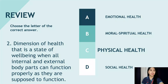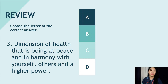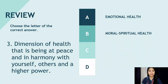Very good! Number three: Dimension of health that is being at peace and in harmony with yourself, others, and a higher power. A. Emotional health, B. Moral-spiritual health, C. Physical health, and D. Social health.